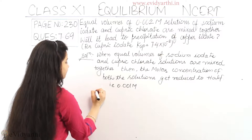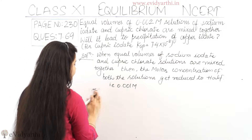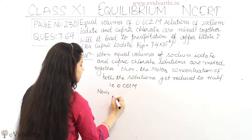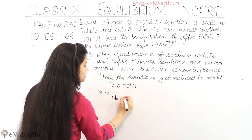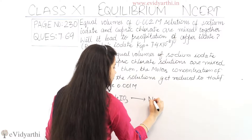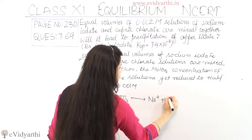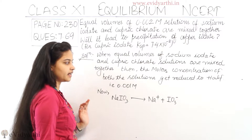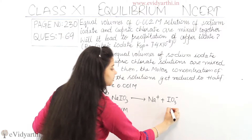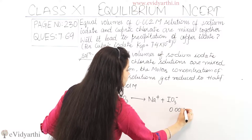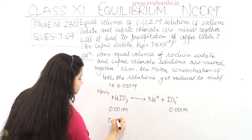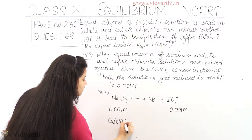Now let's see what ions sodium iodate gives. Sodium iodate dissociates to give Na⁺ and IO₃⁻. What is their concentration? Their concentration is 0.001 molar.